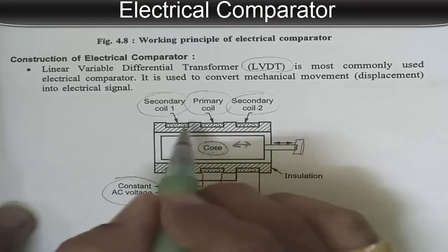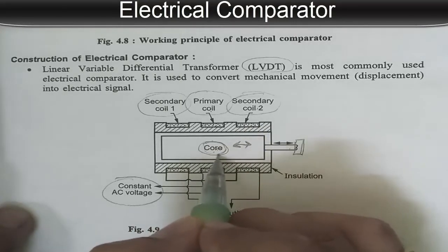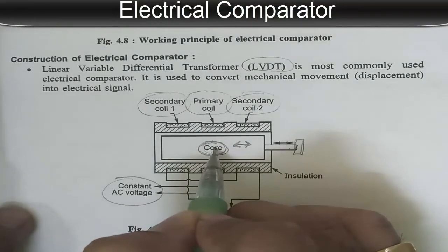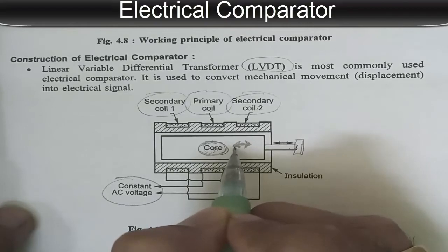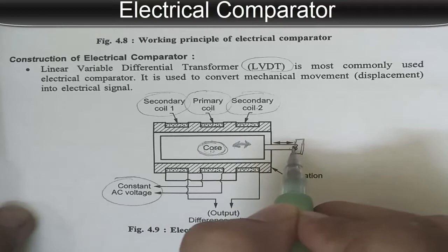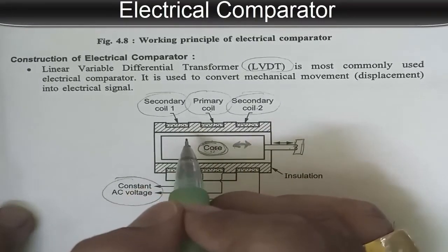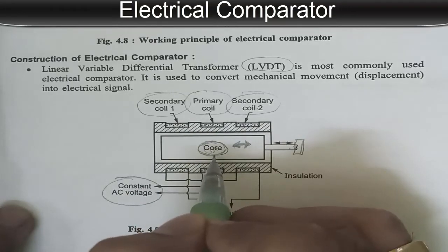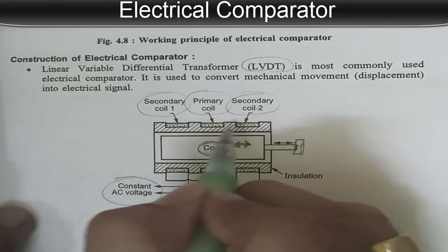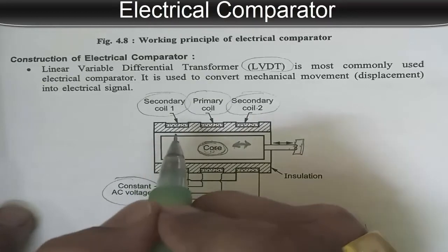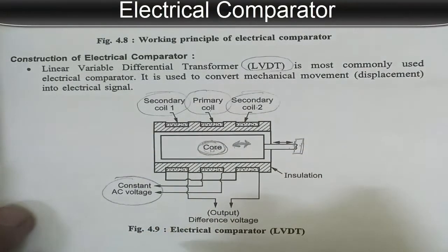When the core is at the middle position, the voltage induced in both secondary coils is the same and out of phase, which gives the net output result as 0. Now, when the core moves right or left even a small distance — and this core is connected with the plunger — a differential voltage appears across the secondary coils in series, which is further calibrated in terms of the linear movement of the core or plunger. With this difference of voltage, we can easily find out the distance moved by the core.